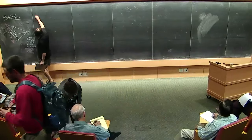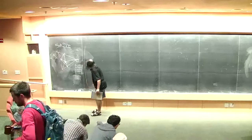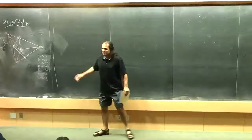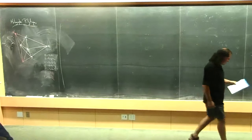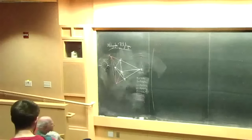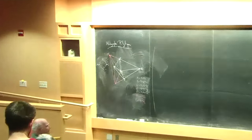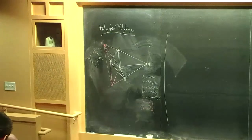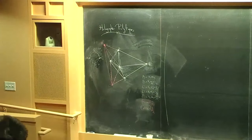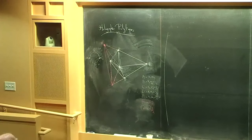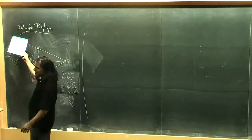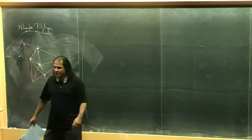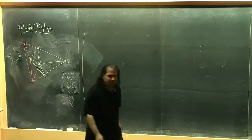I'll be referring to this picture a little later in the talk — I just didn't want to spend the time drawing it in real time. At some point towards the end of the talk, we'll understand how that picture is doing a one-loop calculation in de Sitter or anti-de Sitter space.